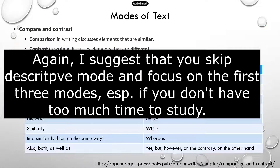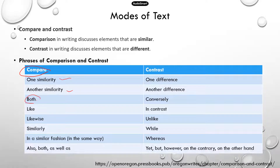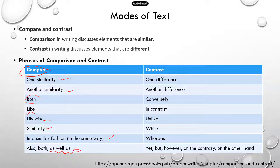There are some key words or phrases you can use to determine whether it's a comparison or a contrast. For comparison — that's about similarities — the author could say 'one similarity is this,' or use words like 'both,' 'like,' 'likewise,' 'similar,' 'in a similar fashion,' 'in the same way,' or 'as well as.' That last phrase is one I see in the official TEAS manual but not in a lot of other writing textbooks.